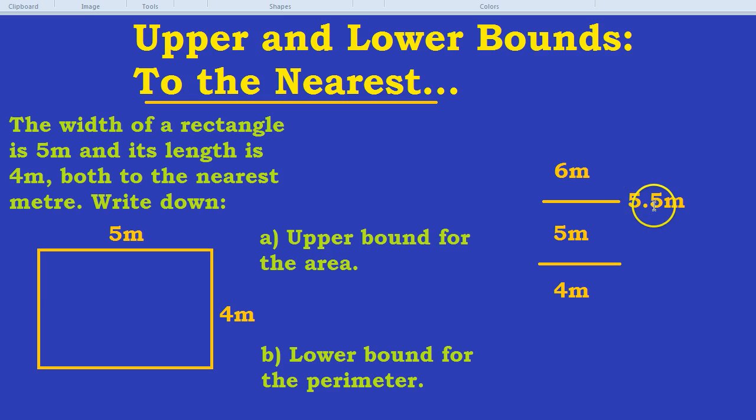I know 5.5 actually sometimes would round to 6, but basically we're just marking out the borderline. The borderline is 5.5, so that's our upper bound. Out of curiosity, what would our lower bound be? Some students would say 5 or 4.9 or something like that, but our lower bound would be halfway here, which would be 4.5 metres. So, upper and lower bounds very often end in 0.5s and that kind of thing.